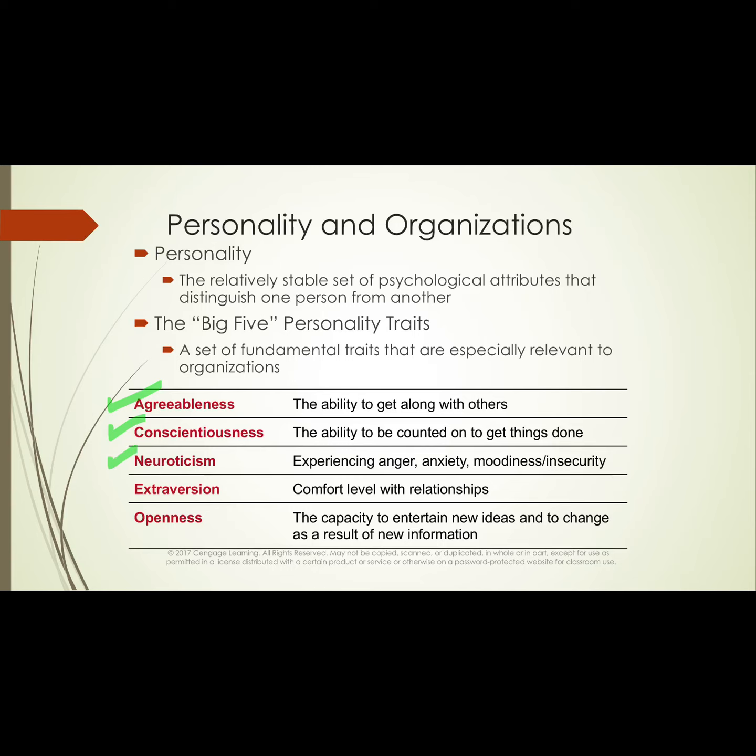Neuroticism involves experiencing anger, anxiety, moodiness, and insecurity — those negative emotions or affects. People who can't handle pressure well may exhibit a higher degree of neuroticism. Extroversion is the degree to which you're outgoing and comfortable with relationships. I'm outgoing as a pastor and professor, but in private I'm quite reserved. Extroversion measures how comfortable you are with relationships — are you someone who's never met a stranger, or do you keep to yourself at a party?